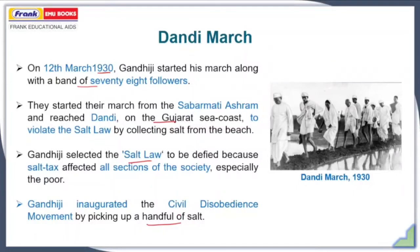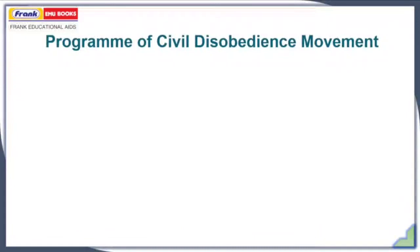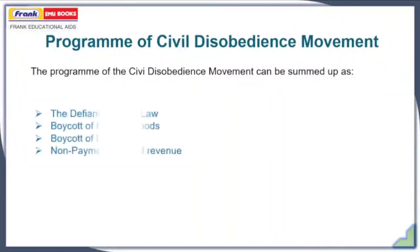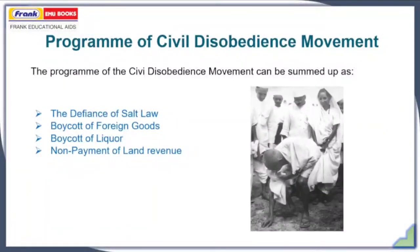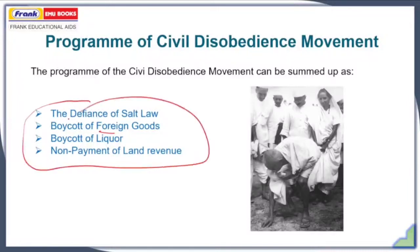Dandi March became one of the major breakthroughs of the Civil Disobedience Movement. The course of events can be summarized as follows: the salt law was defied all across the country. Foreign goods were boycotted and burnt in collective bonfires. Liquor was also boycotted. Land revenue was not paid by the peasants to the colonial administration. You can see here Gandhiji picking up salt and violating the salt law.